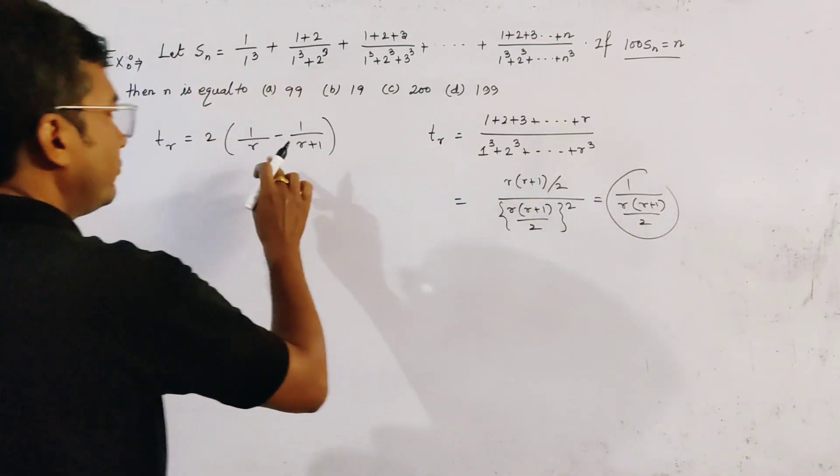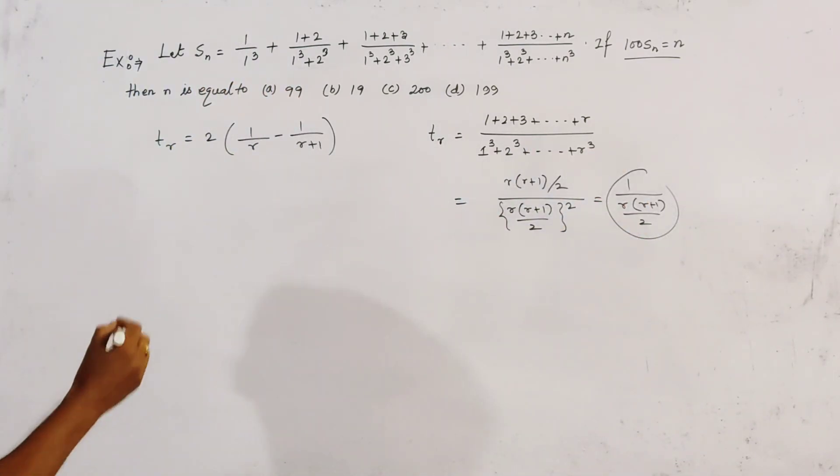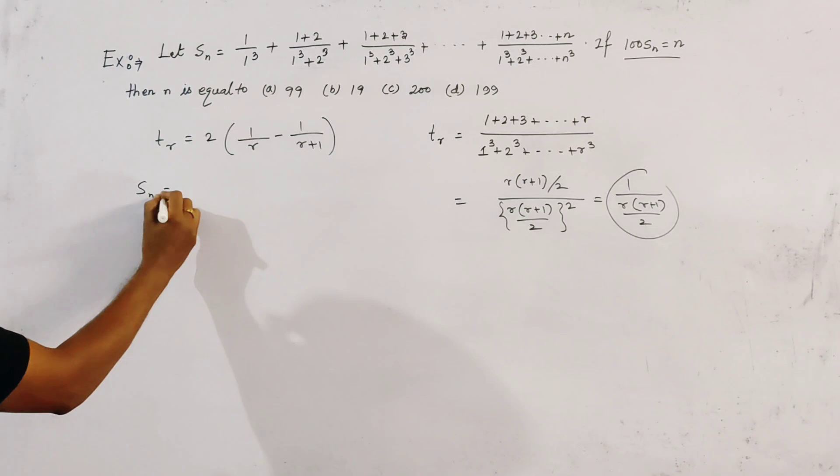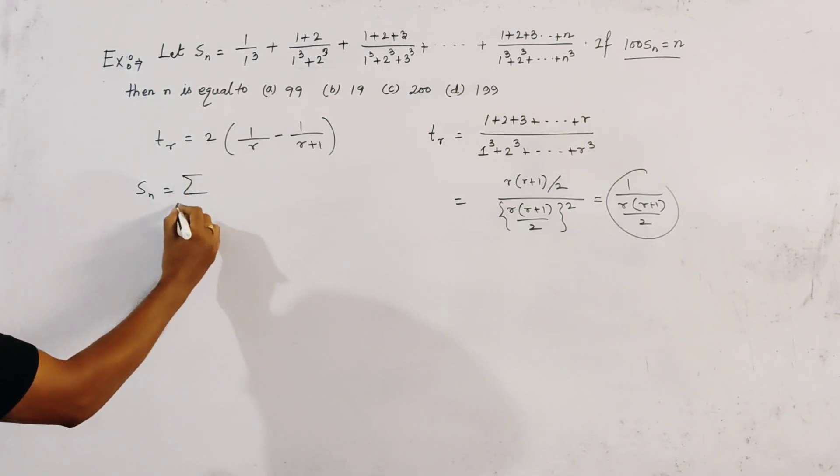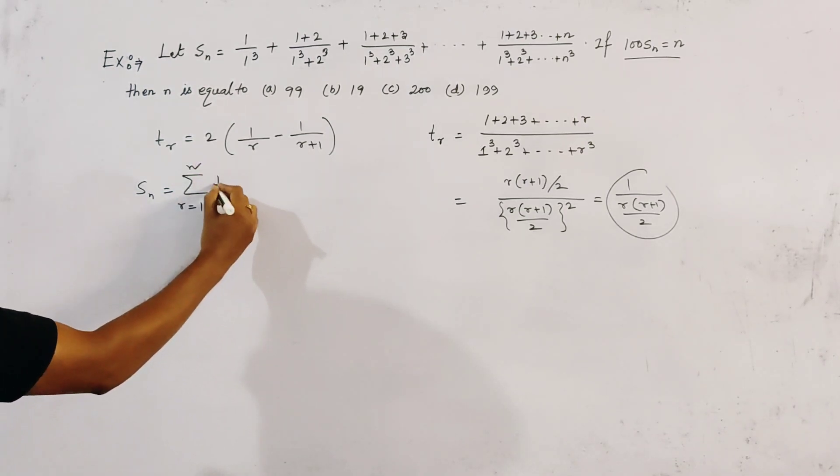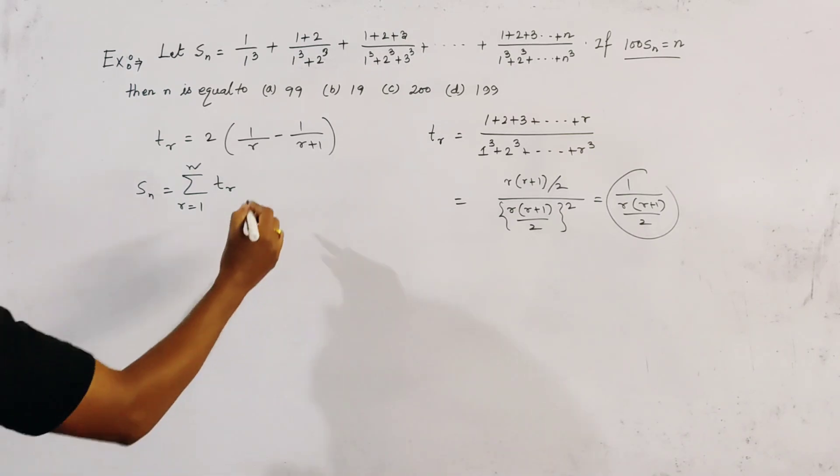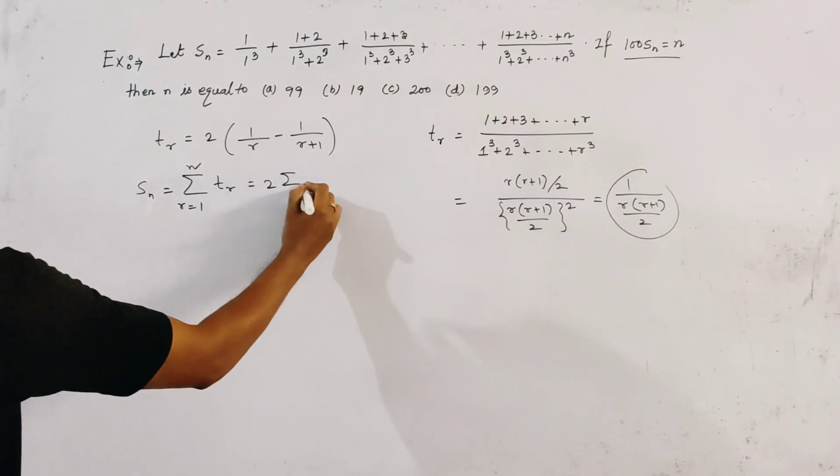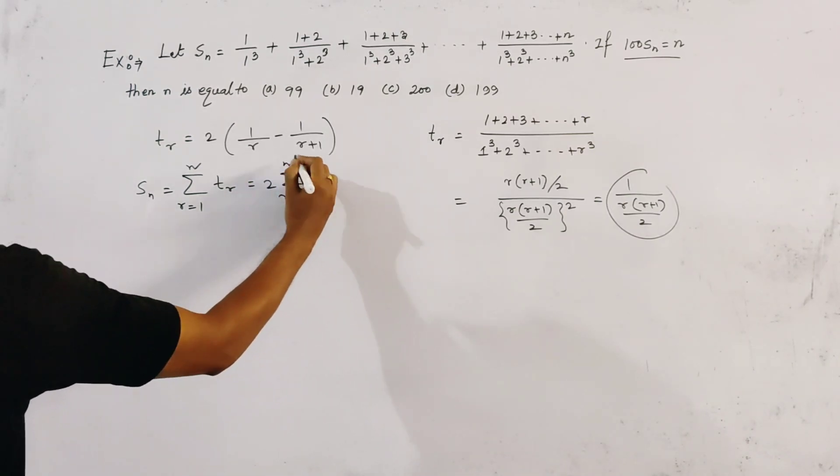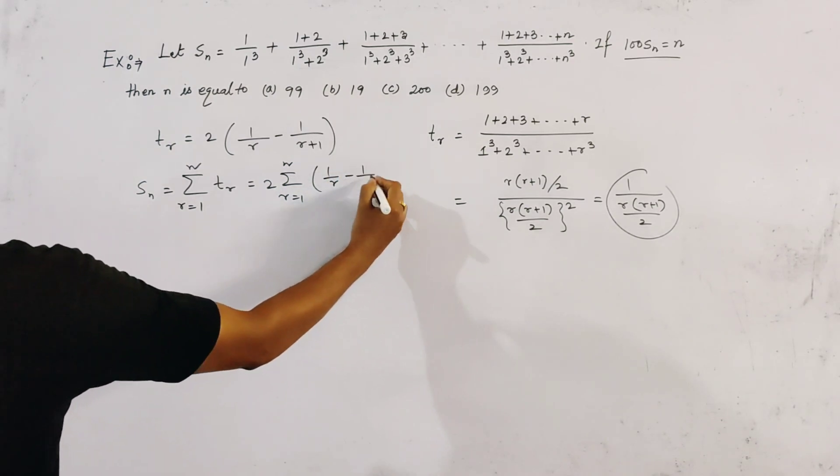Now Sn means summation from r=1 to n of tr, and this is given by 2 times summation from r=1 to n of (1/r minus 1/(r+1)).